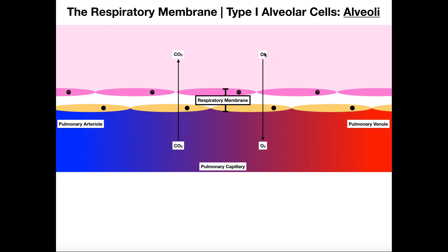Here we have a summary: oxygen moves from the alveolar space into the pulmonary capillary, while CO2 moves from the pulmonary capillary into the alveolar space. These gases move in opposite directions. These two membranes are so thin that they allow this gas exchange to take place efficiently and rapidly. Collectively, these two membranes are called the respiratory membrane.